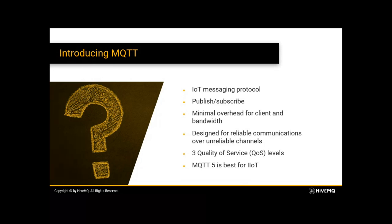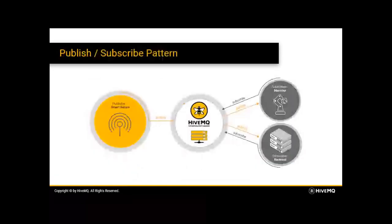MQTT5 is the best scenario for IoT and Industrial Internet of Things. This is how the overall diagram looks: on the left-hand side you have a smart sensor as a publisher, which publishes data and messages to the HiveMQ broker or the MQTT broker server. That eventually publishes again to the subscriber, which could be a machine or a backend application.